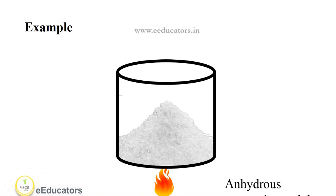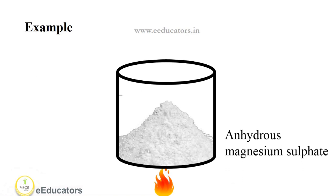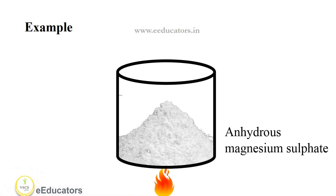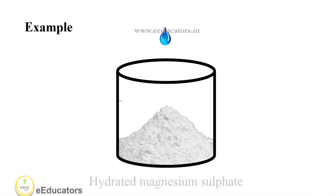it loses its water molecules and becomes anhydrous magnesium sulfate. Once the anhydrous magnesium sulfate is cooled, or if water is added, it turns back to its hydrated form.